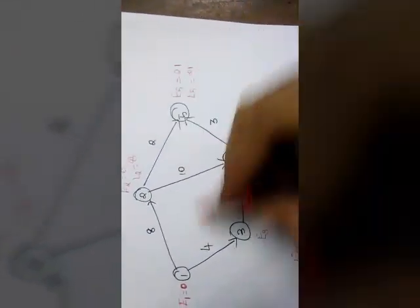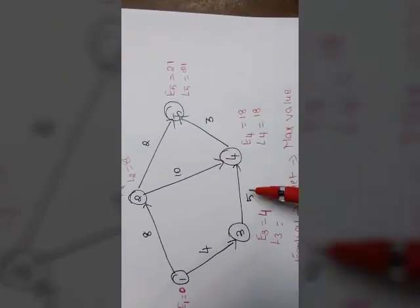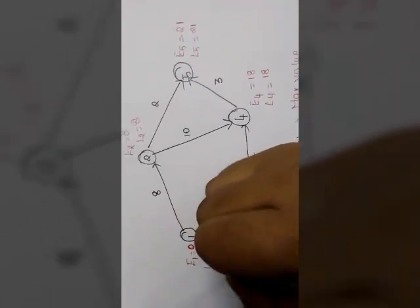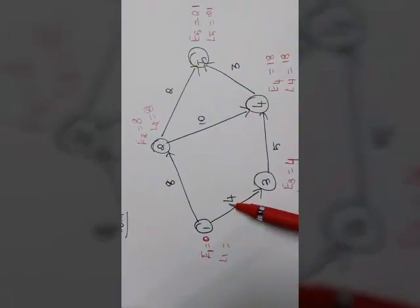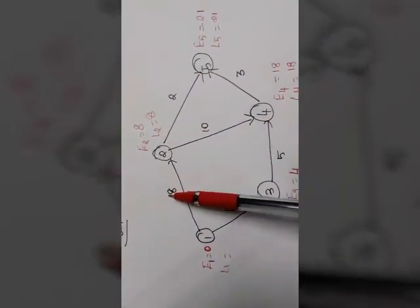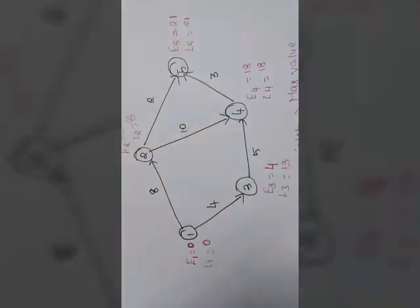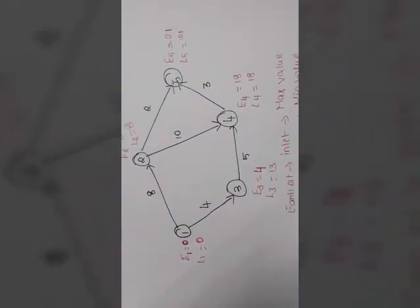So now L3. L3 is 18 minus 5 which is 13. Now L1. L1 will be 13 minus 4 will be there and 8 minus 8 will be there. So minimum value is 8 minus 8. Take it into account 0. So this will be your earliest time and latest time.